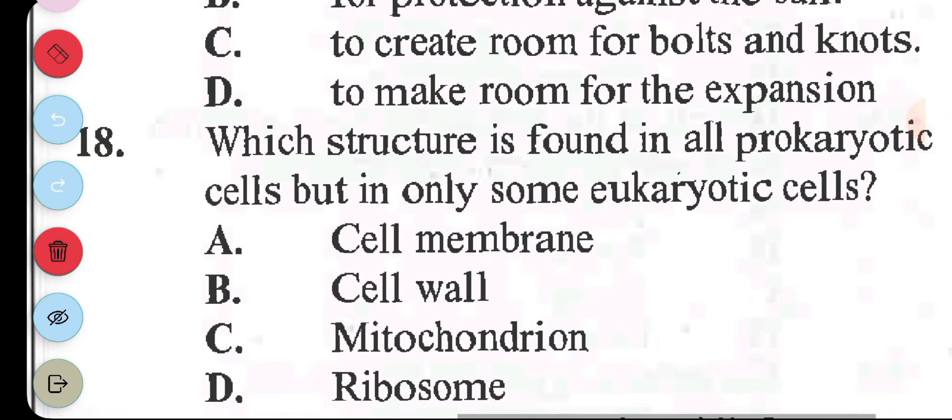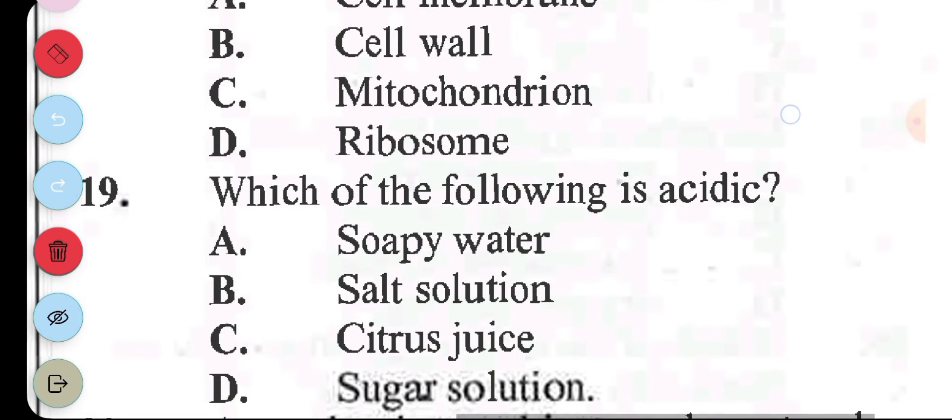Question 18: which structure is found in all prokaryotic cells but in only some eukaryotic cells? A, cell membrane. B, cell wall. C, mitochondrion. D, ribosomes. The answer to question 18 is B, cell wall. Cell wall is found in plant cells as well as fungi, which are eukaryotic cells. Question 19: the following is acidic. A, soapy water. B, salt solution. C, citric juice. D, sugar solution. The answer to question 19 is C, citric juice.